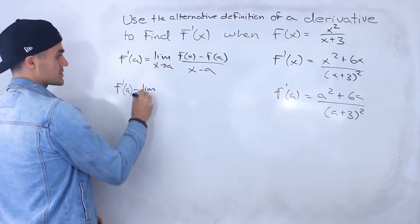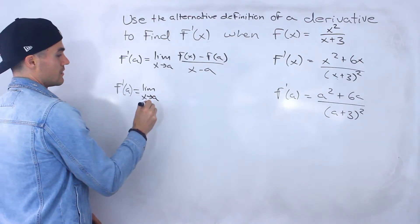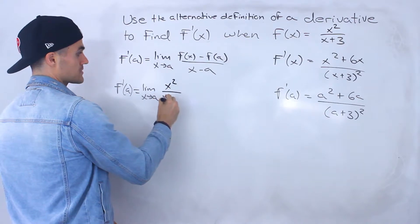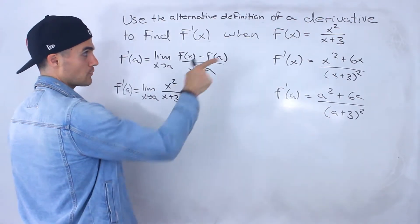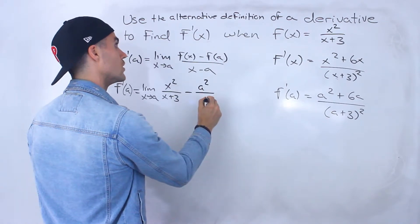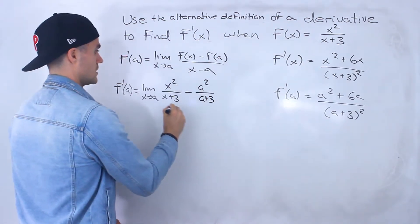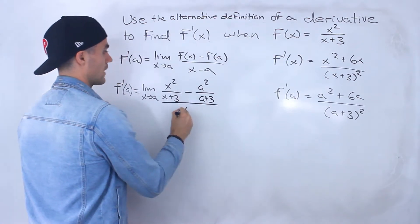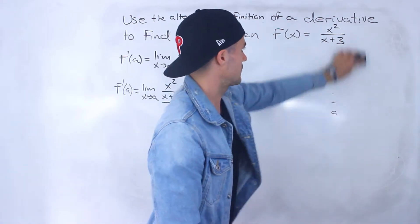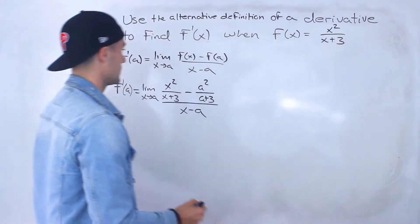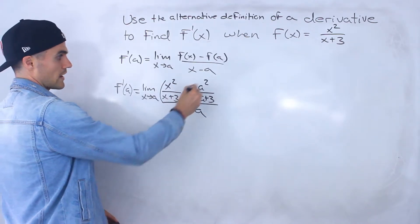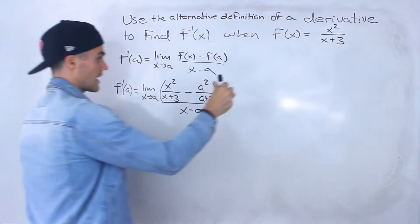We'll have the limit as x approaches a. f of x is x squared over x plus 3, minus f of a — plugging in a for all x values — gives us a squared over a plus 3. This is all over x minus a. I'm going to rewrite this expression in the numerator on the side since we'll need a lot of room.